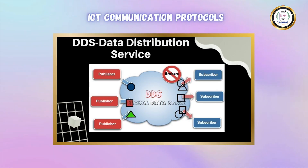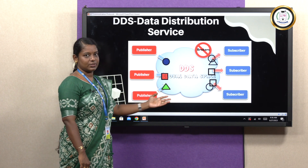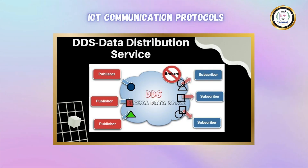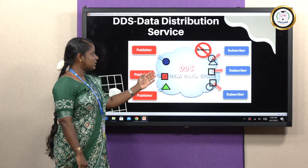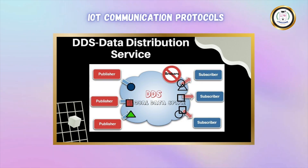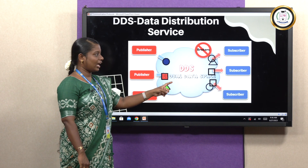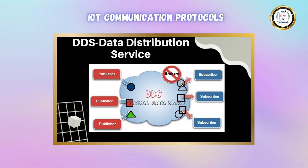Next is DDS protocol, which is Data Distribution Service. Here, no brokers are involved. Direct communication takes place with the help of a DDS web server. If a publisher needs to send information to a subscriber, all messages from the publisher are saved in the DDS database using a unique ID and messaging code. From the DDS database, through the provided ID, the subscriber receives the message without any broker in between. This is a direct publish-to-subscriber model protocol.